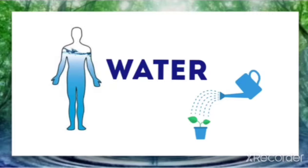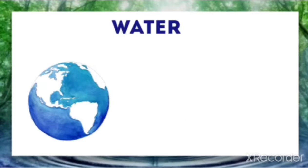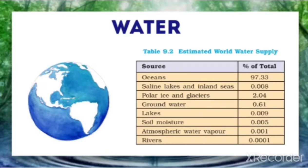The distribution of water over the earth's surface is not uniform. The estimated world water supply is given in Table 9.2.